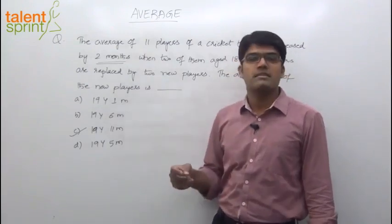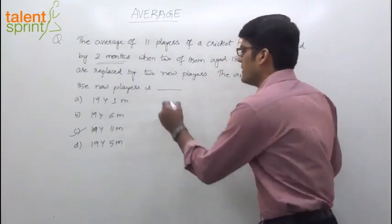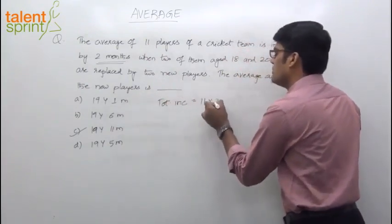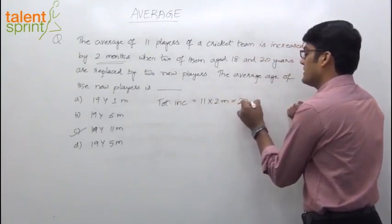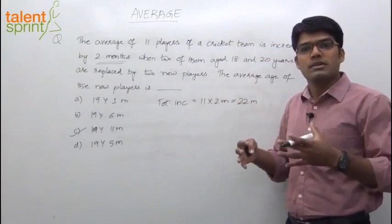How many players do we have? 11 players. So what's the total increment? 11 into 2 months, 22 months. So total increment is 11 into 2 months, which is equal to 22 months. The total increment in the age of the group is 22 months.